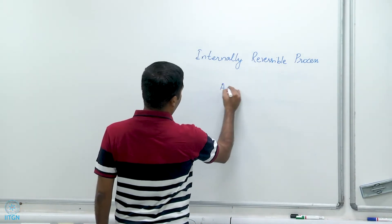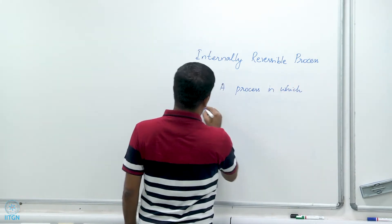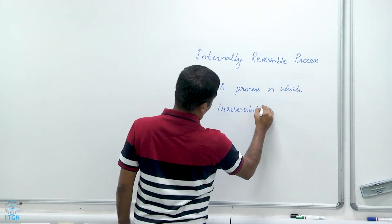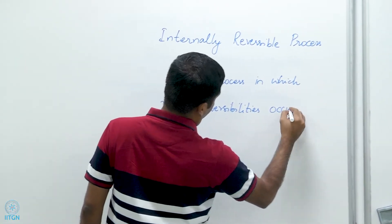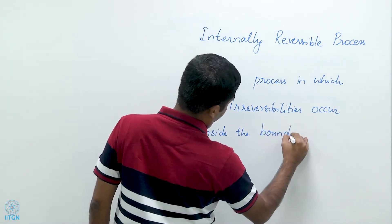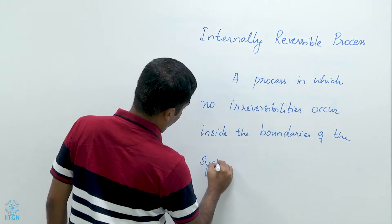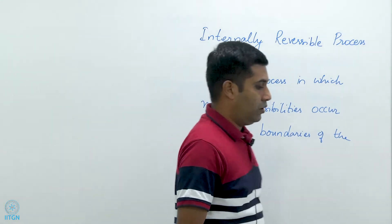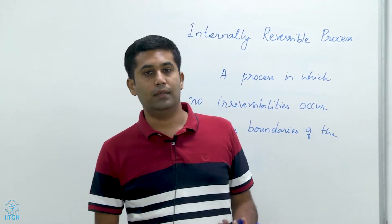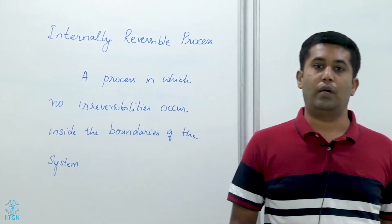An internally reversible process is a process in which no irreversibilities occur inside the boundaries of the system. So although there are irreversibilities in the process, those irreversibilities are not occurring inside the boundary of the system. In other words, all the irreversibilities are occurring outside the boundary of the system.